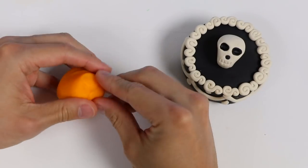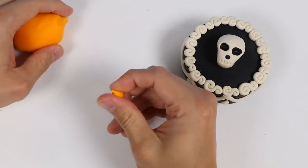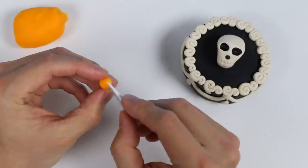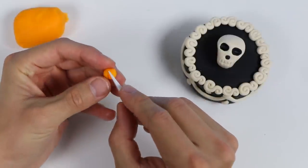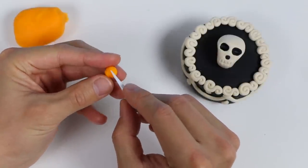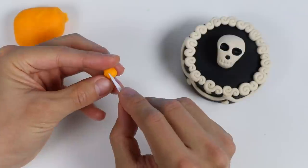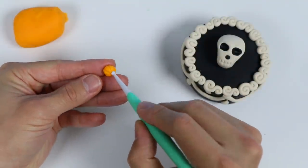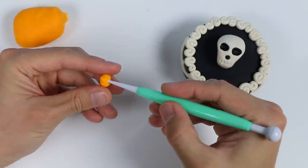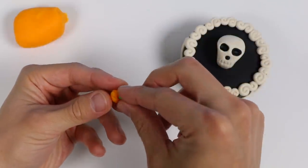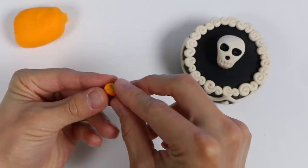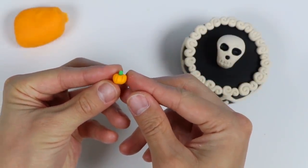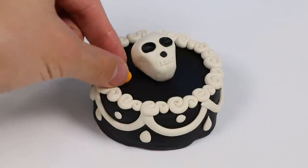Now let's use orange Play-Doh to make a few pumpkins. Use this tool to make the ribs. Poke a hole right here. And make a tiny green cone for the stem. There we go. Isn't this a cute pumpkin? Make a few more like this and place them around the skull.